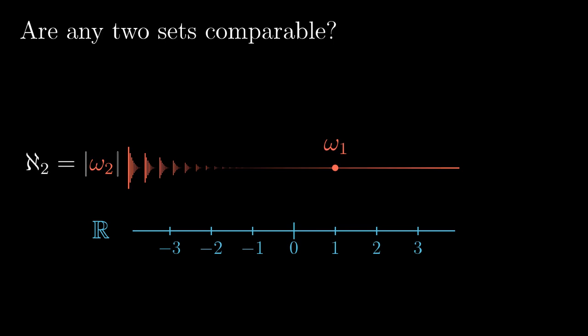We only know that omega-2's cardinality is the third among infinite cardinalities. Regarding the real line, we only know that its cardinality is at least aleph-1. It is even impossible to prove any inequality between the two cardinalities — maybe they are of the same size, maybe the real line is larger, maybe smaller. We will never know. Despite this, we can prove that it is possible to compare the two sets, although we are never going to figure out the answer.